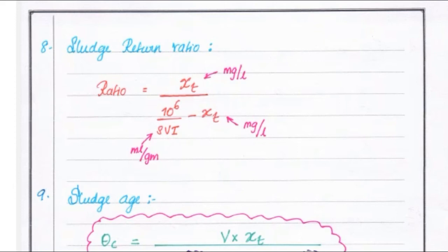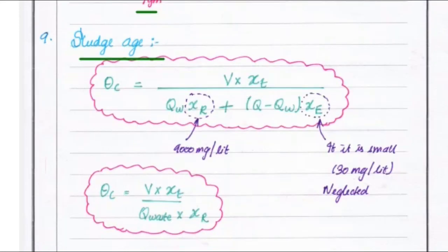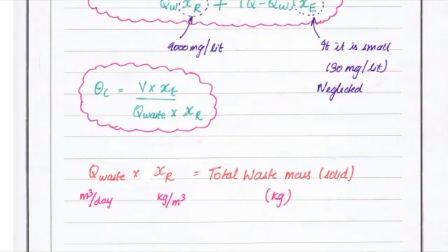Next is the sludge return ratio, which equals XT in milligram per liter divided by 10 to the power 6 divided by SVI, where the unit of SVI is milliliter per gram and XT is milligram per liter. For sludge age, theta-C equals V into XT divided by QW into XR plus (Q minus QW) into XE. Here XR equals 9000 milligram per liter and XE is small, about 30 milligram per liter, so XE can be neglected. Thus theta-C simplifies to V into XT divided by Q-waste into XR, where Q-waste in meter cube per day into XR gives total waste mass.